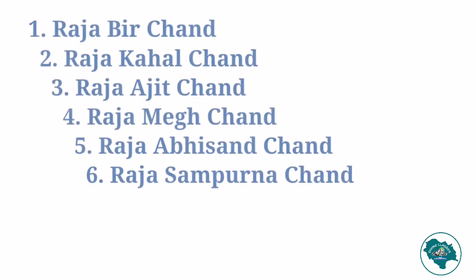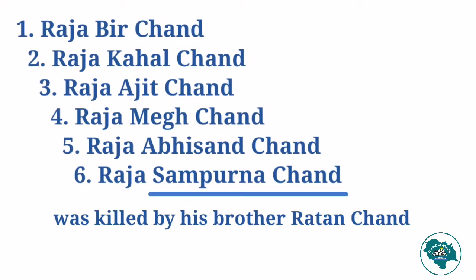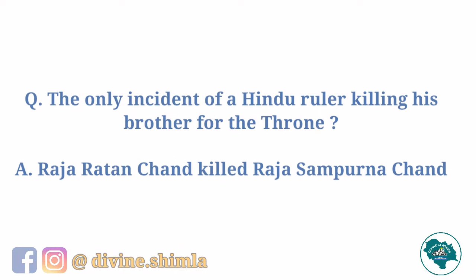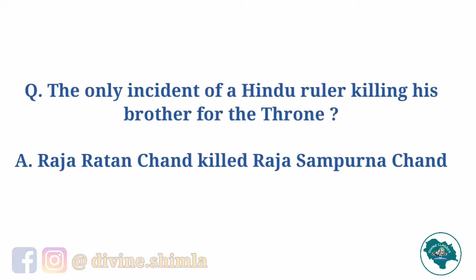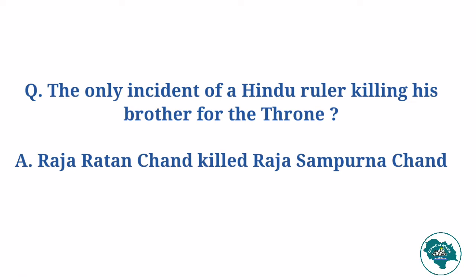After Abhisanchand came Raja Sampoonchand, who was killed by his brother Rathanchand. This is very important for study because this was a rare case in Hindur — killing a brother for the throne. Rathanchand had a long reign and maintained good relations with the Delhi Sultans.